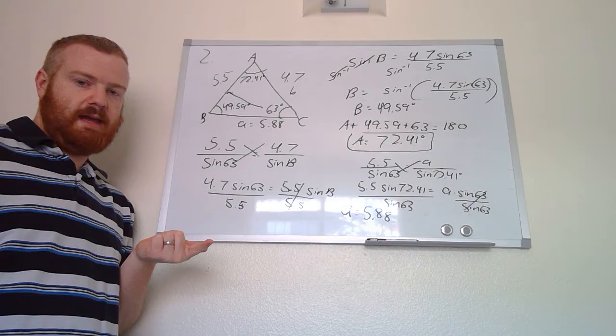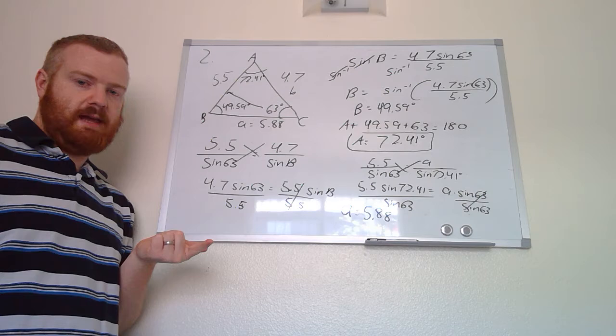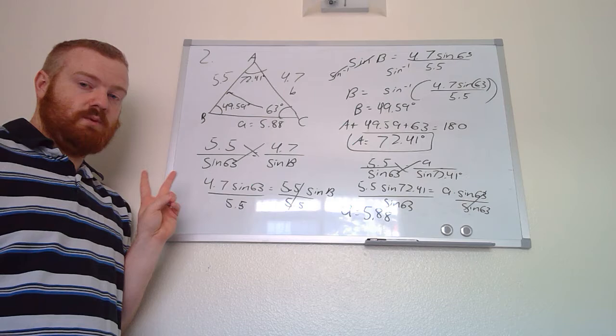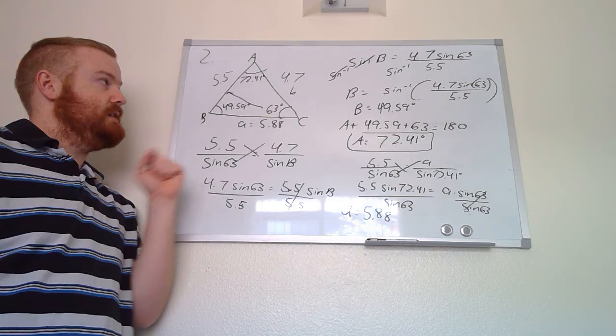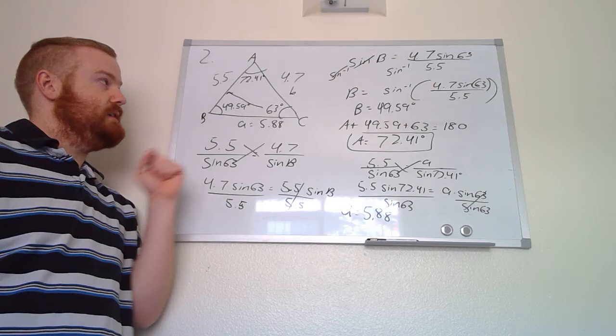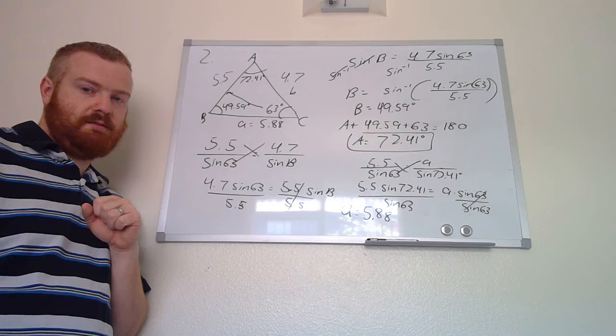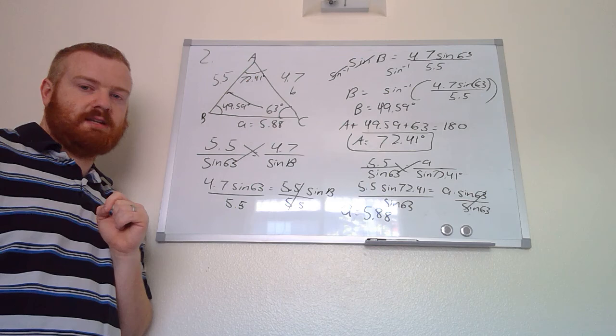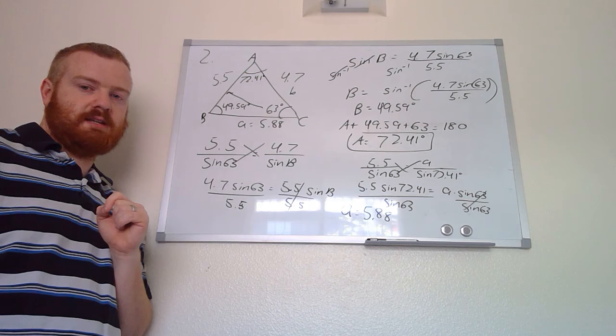Now we have all missing values — all sides and all angle measurements. To summarize: if you start with two angles and one side, solve for the missing angle first, then use the Law of Sines twice to find the two missing sides. If you start with two sides and one angle, use the Law of Sines with sine inverse to find a missing angle, then find the third angle by subtracting from 180, and finally use the Law of Sines one last time for the missing side. Regardless of the type, you'll always use the Law of Sines two separate times.